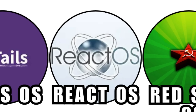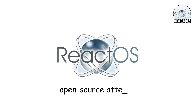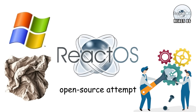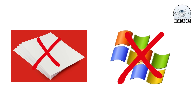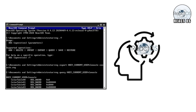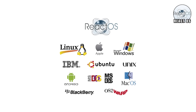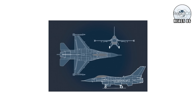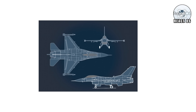The OS that looked too much like Windows: React OS. React OS is an open-source attempt to rebuild Windows from scratch — not copy it, not clone it, but recreate its behavior using entirely original code. It's one of the most ambitious projects in OS history, like trying to reverse-engineer a jet airplane by staring at it through a window.